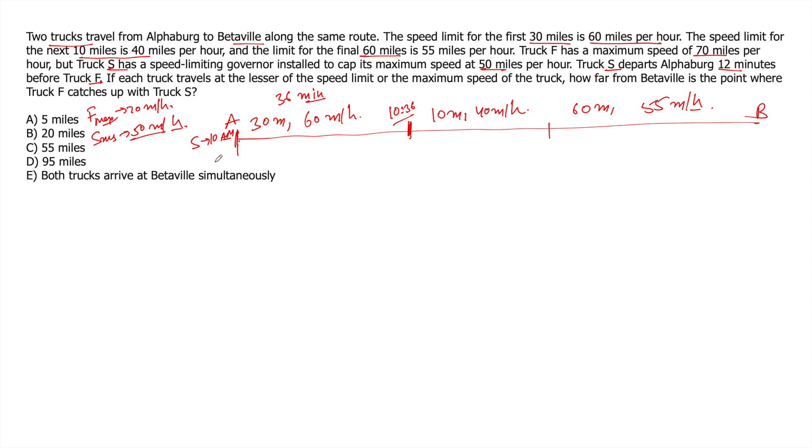F would start at 10:12, 12 minutes later. And its maximum is 70 miles per hour, but the speed limit here on this route is 60 miles. So it will have to travel at 60 miles per hour and to cover 30 miles, it'll take 30 minutes. So reach this point at 10:42.